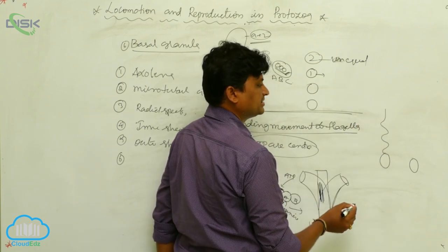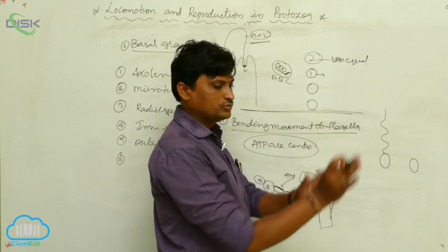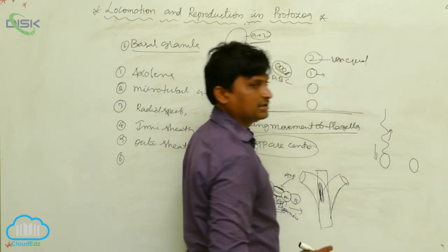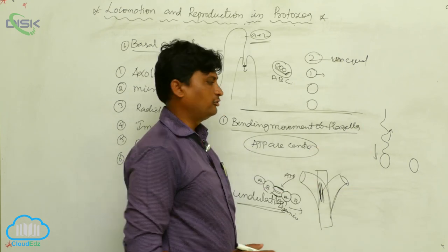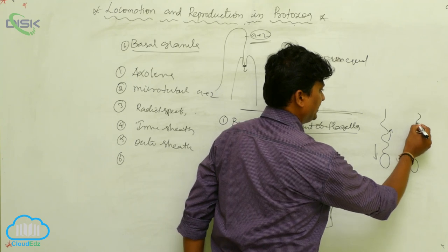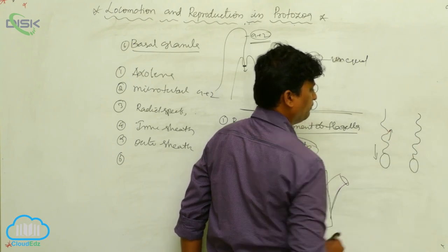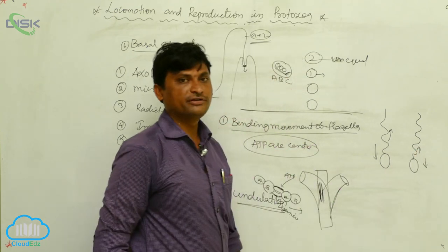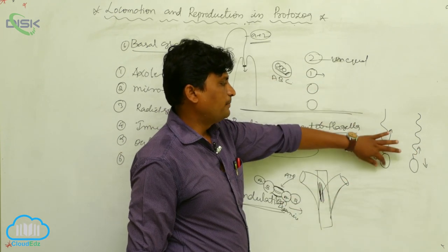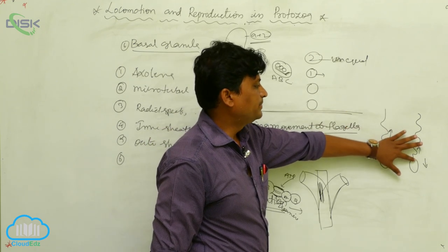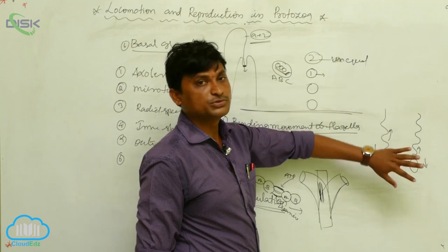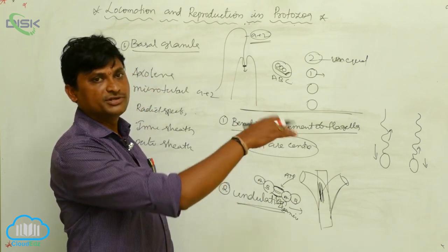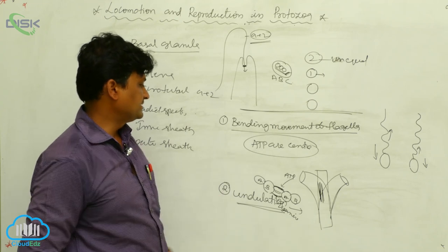When the wave moves from base to tip, like a boat propeller pushing backward, the organism moves in the forward direction — these are called pulling forces. The second type is where propulsion starts from the tip of the flagella and ends at the base of the organism, generating pushing forces. These two opposite undulation movements — base-to-tip (pulling) and tip-to-base (pushing) — represent different types of flagella movement, including wave-like movements.